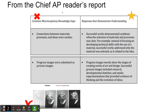From the Chief AP Reader's Report, two things I pulled out: I'm going to talk about the bottom before the top. Progress images were submitted as process images — that was a common misconception last year. Here's the language they use: process images merely show the stages of creating a work of art and design, but successful process images include the research, developmental sketches, and media and experimentations that provide evidence of thinking and the evolution of ideas.